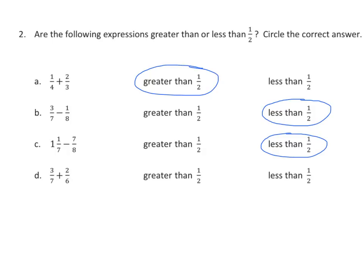We have 3 sevenths plus 2 sixths. 3 sevenths is almost 1 half, and 2 sixths is pretty close to half because 3 sixths is half. So if we have two fractions that are pretty close to half and we're adding them, our sum will be greater than 1 half.